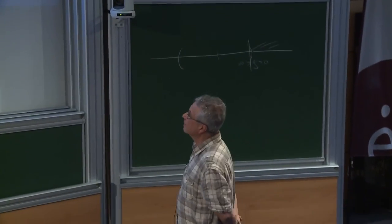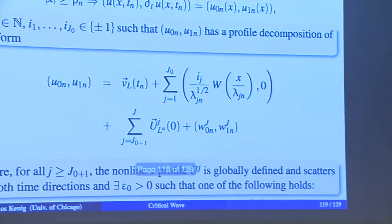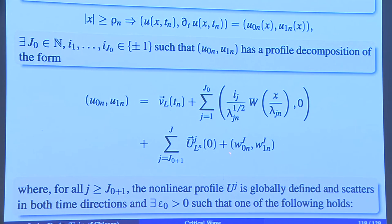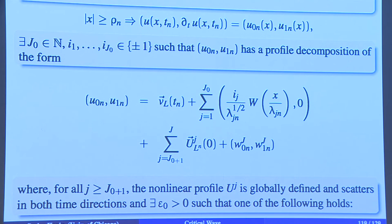We assume this inductive lemma: there is no profile decomposition where some profiles have this channel of energy. This morally forces all profiles to be W's, because if we have a channel of energy the only possibility is that those things are W. Not only that, but the error has to go to zero. That's why the dispersive property implies the soliton resolution.